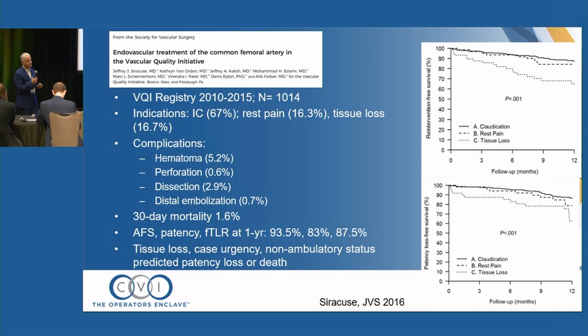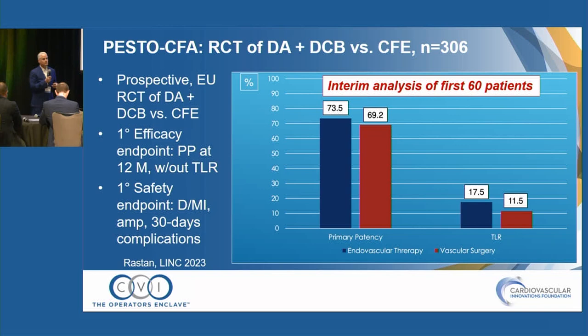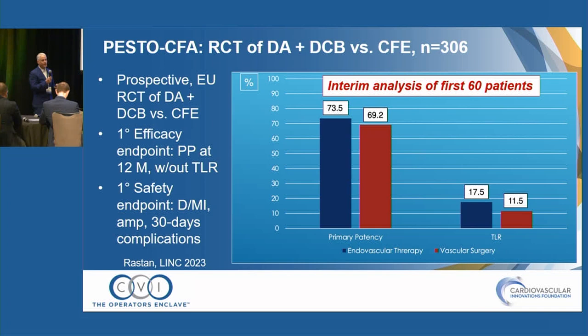What are the different modalities we can use from an endo standpoint to treat the common femoral? We usually try not to put stents there, and one popular option is atherectomy. This is initial results from the PESTO study — a randomized trial of directional atherectomy with DCB versus common femoral endarterectomy. This is an ongoing study, but the first interim analysis of 60 patients showed that endo actually hangs in there, with slightly better results in terms of primary patency and TLR rates.